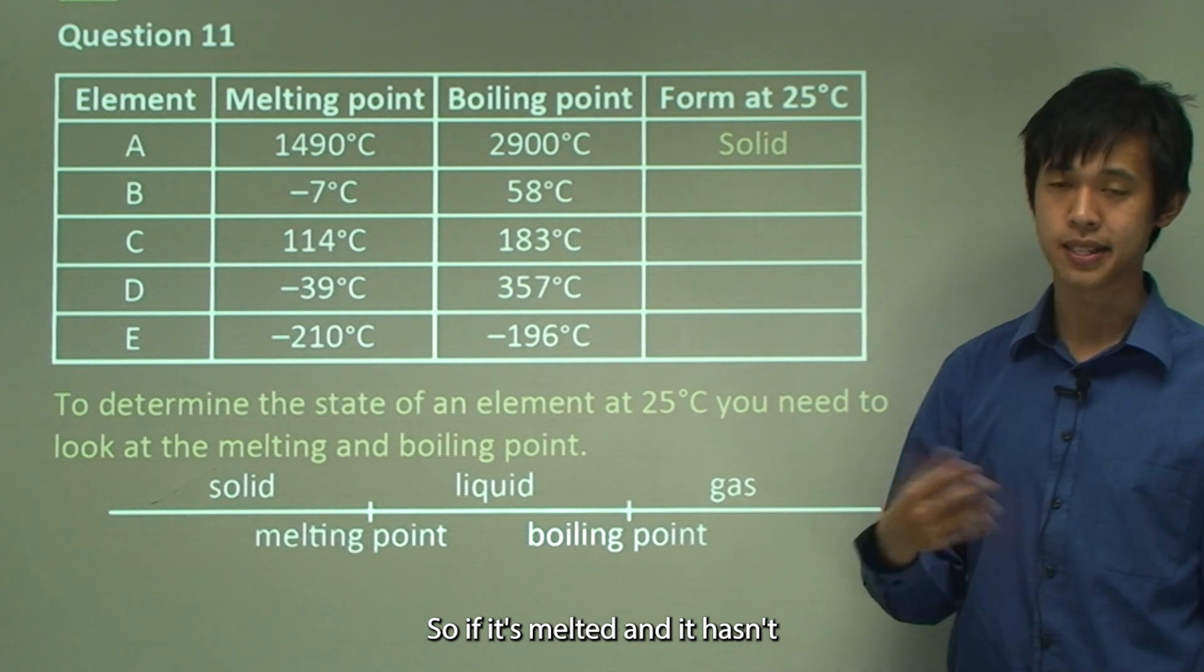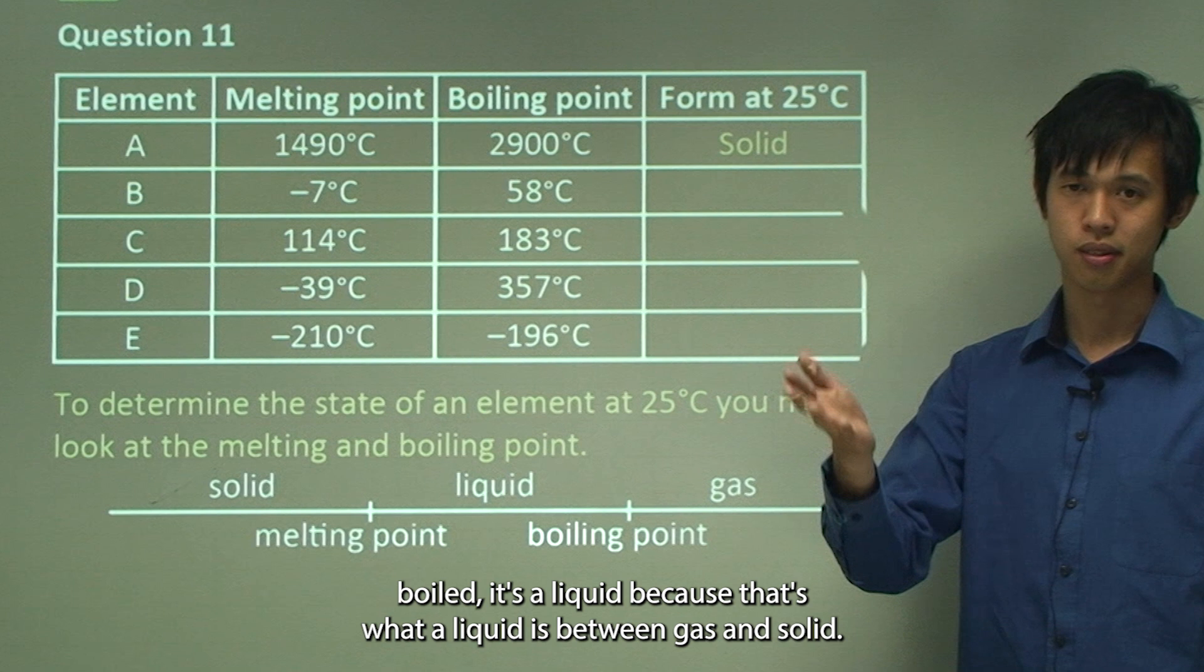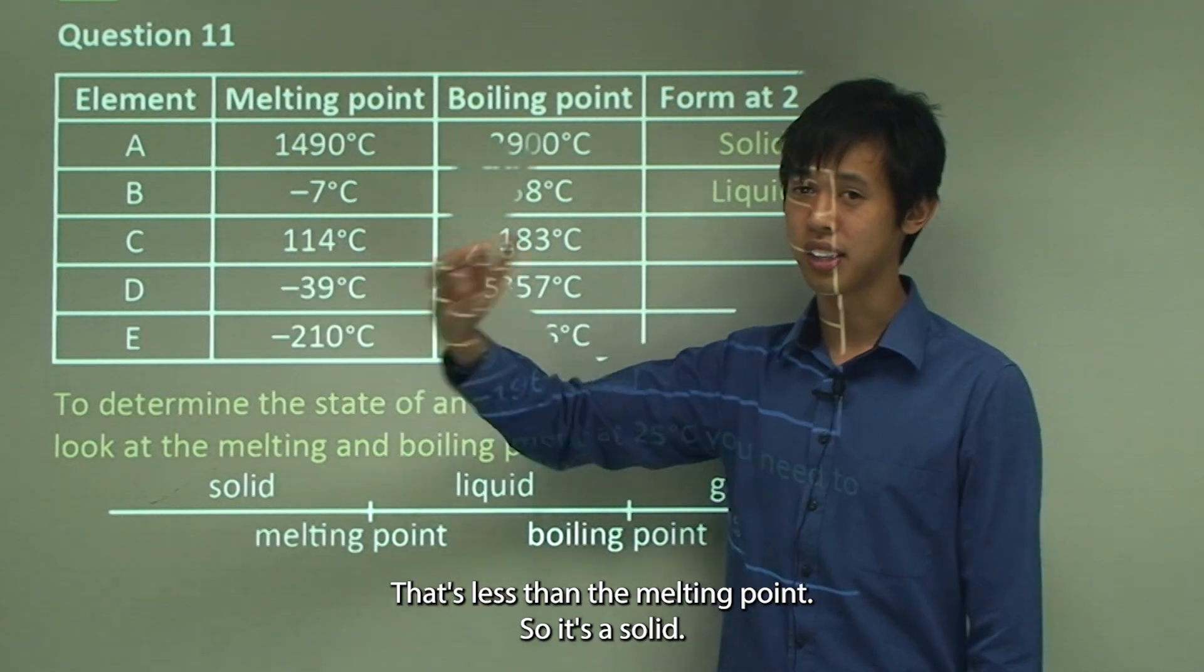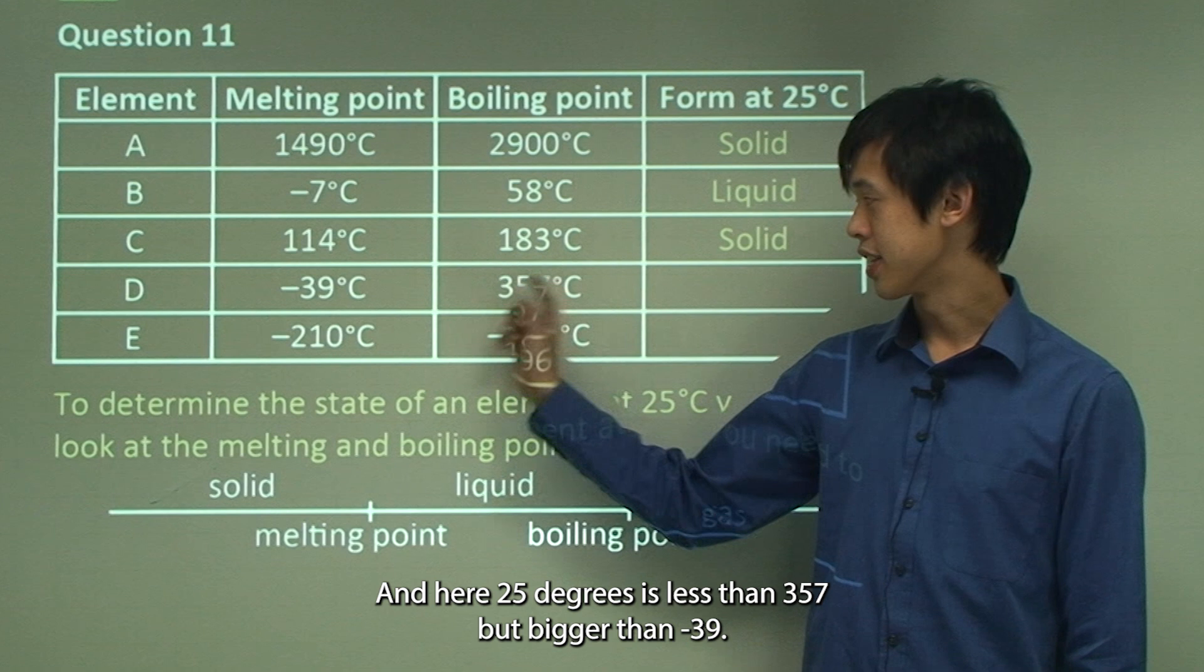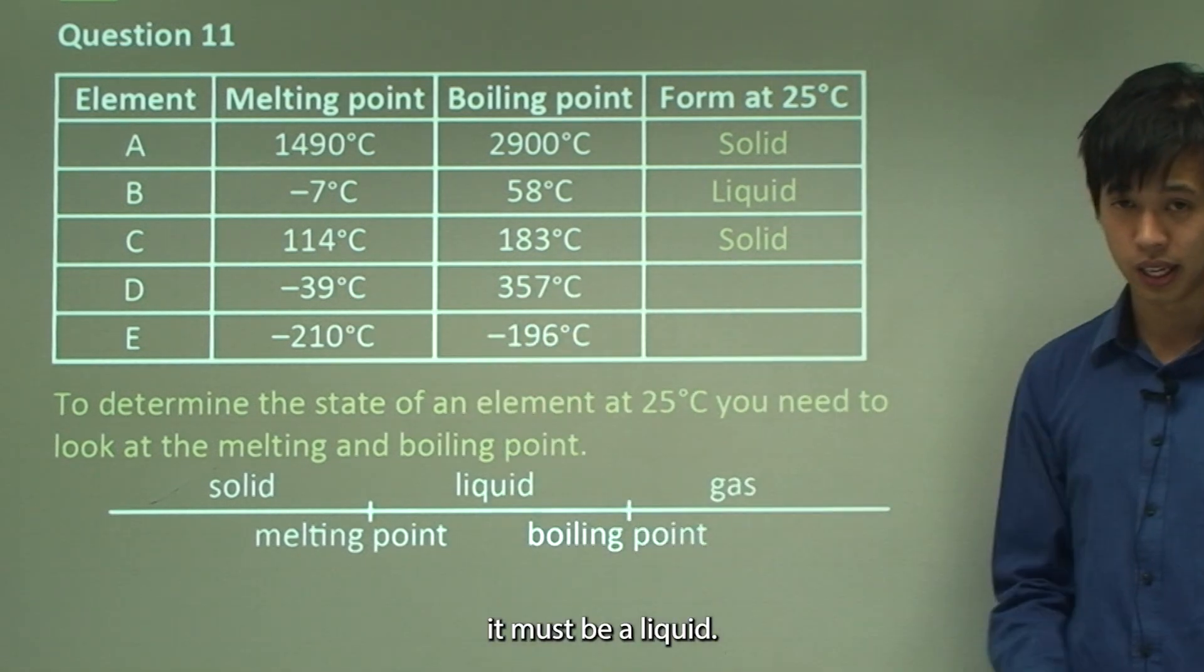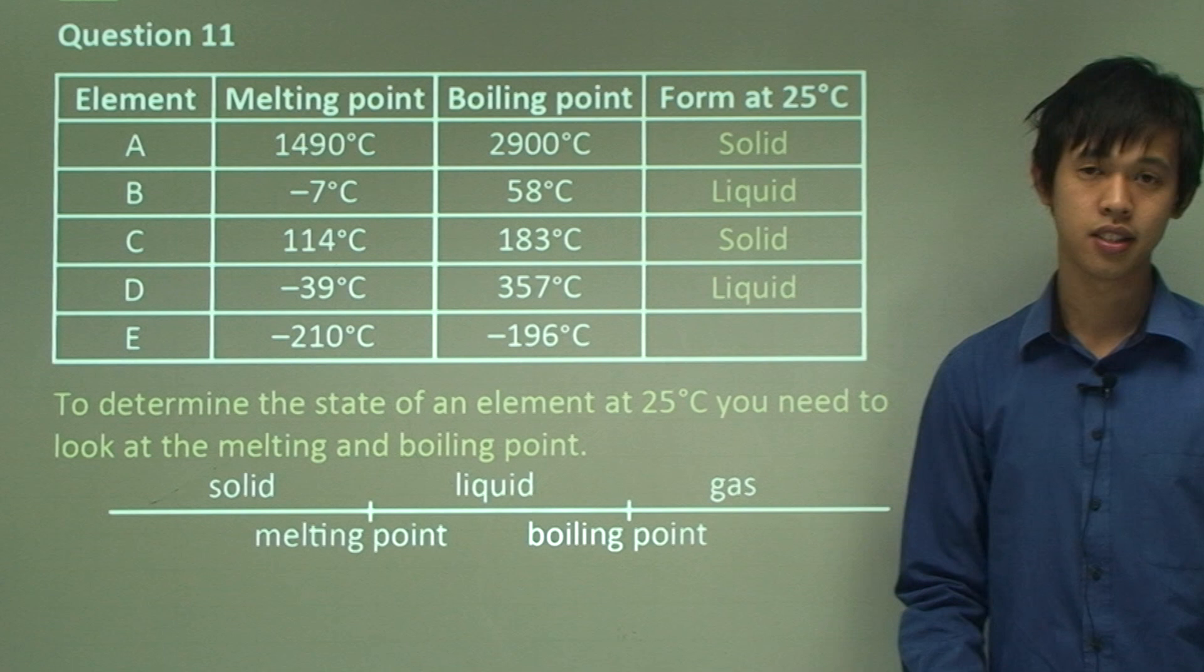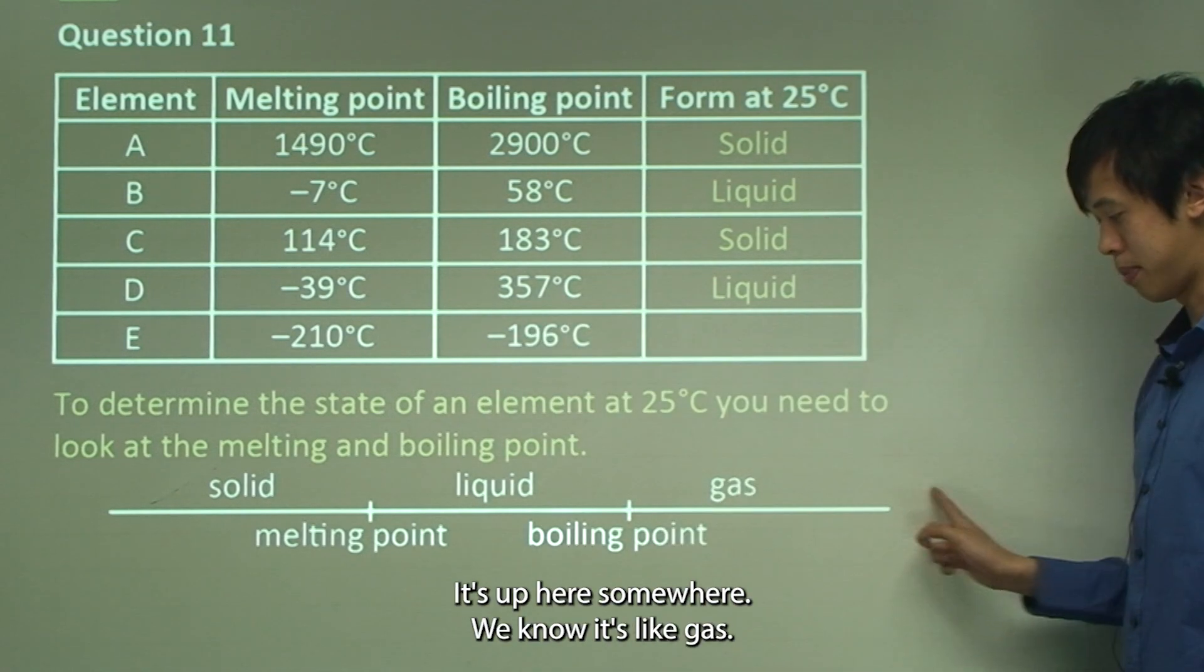If it's melted and it hasn't boiled it's a liquid, because that's what a liquid is, it's between gas and solid. And if we go through the next one, 25 is less than 114 so it's less than the melting point so it's a solid. And here, 25 degrees is less than 357 but bigger than negative 39, it must be a liquid. And lastly, 25 degrees Celsius is much bigger than minus 196 degrees Celsius, so it's bigger than the boiling point, we know it's a gas.